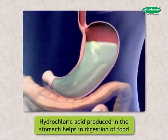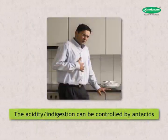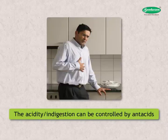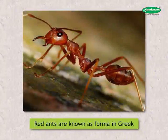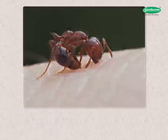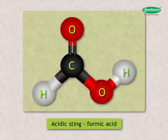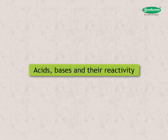Hydrochloric acid produced in the stomach helps in digestion of food. Acidity or indigestion problems can be controlled by adding basic substances called antacids. Do you know red ants are known as 'forma' in Greek? When you are stung by a red ant, it causes itching and irritation — this is due to the acidic sting by red ants, known as formic acid. Honey bee sting also causes a burning sensation.